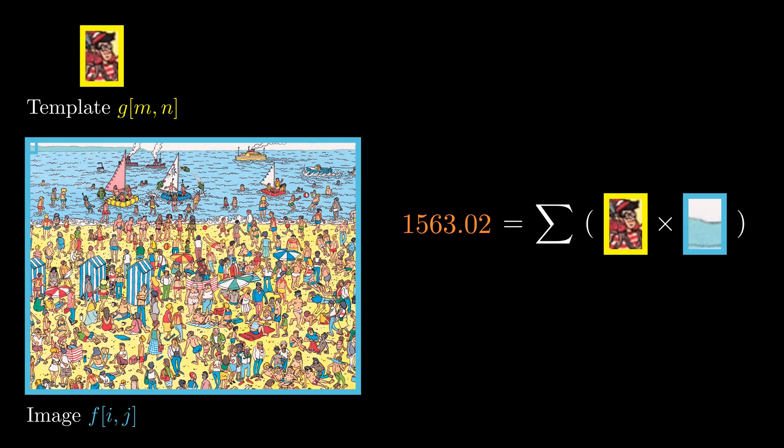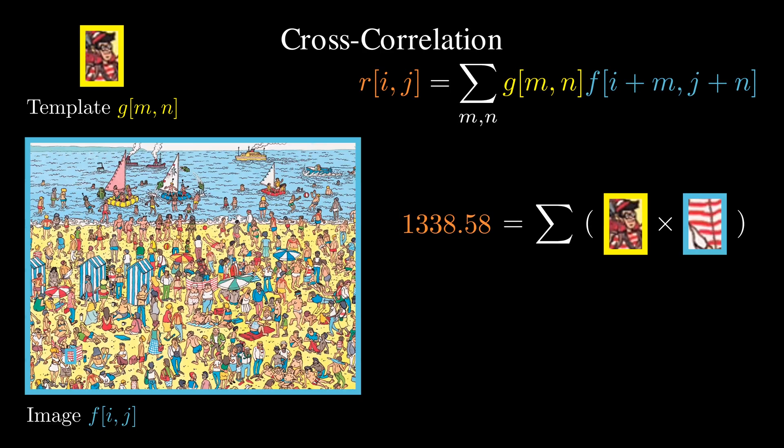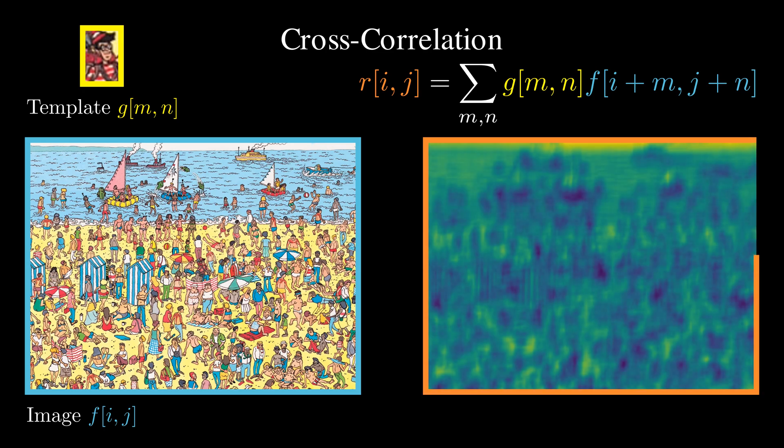The result: a score indicating how well the image patch matches with our template. This process is called cross-correlation. We repeat this for every possible position in the image, creating a response map. The brighter the response, the more likely Waldo is there.